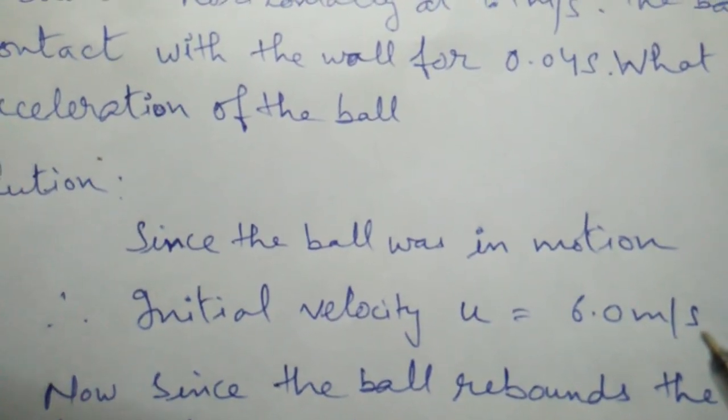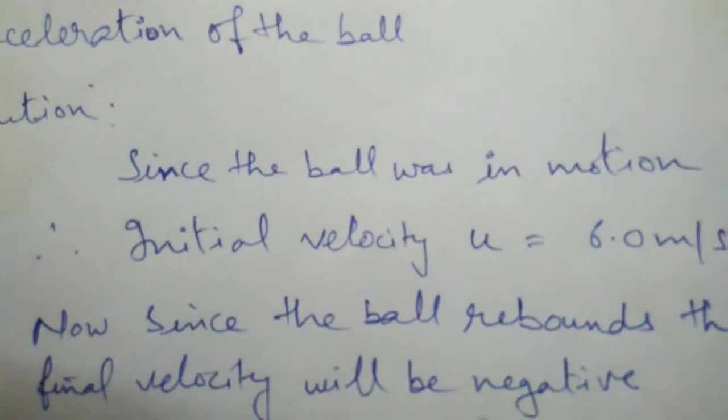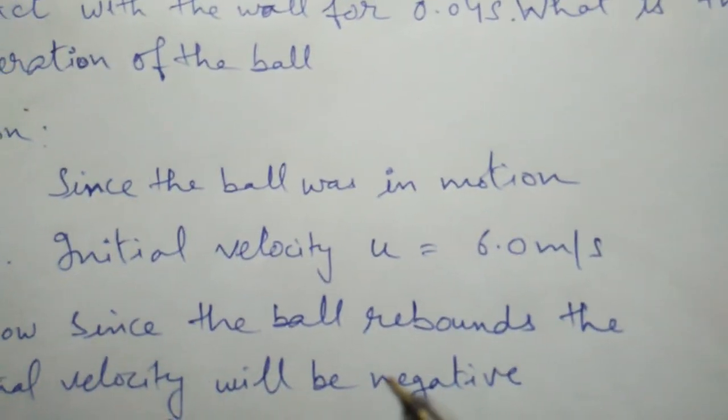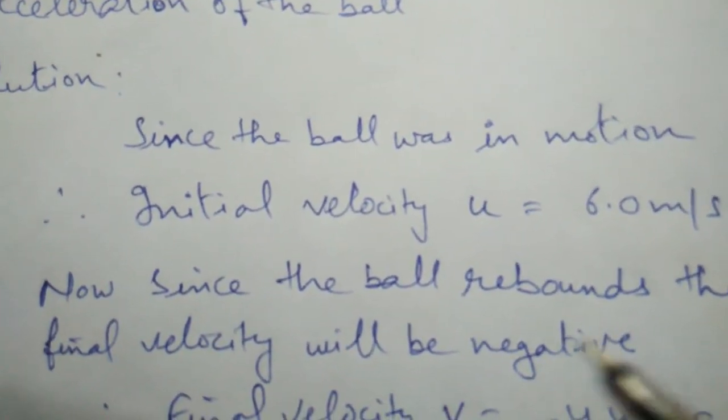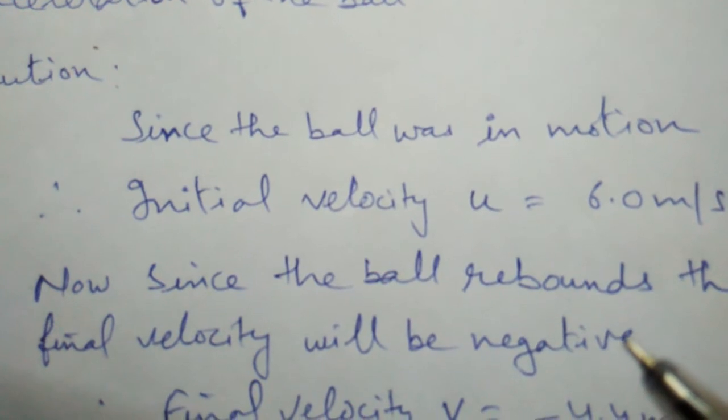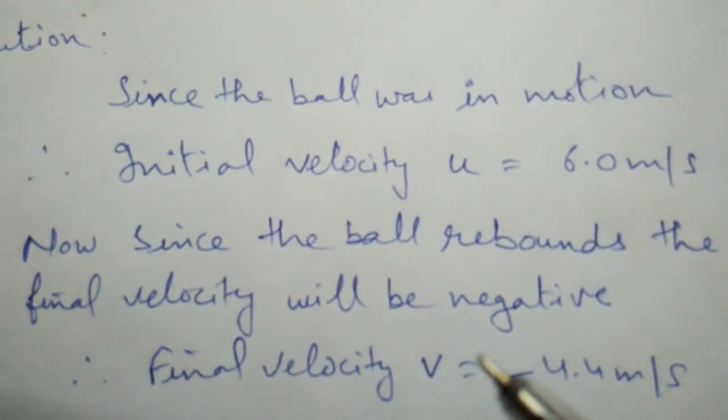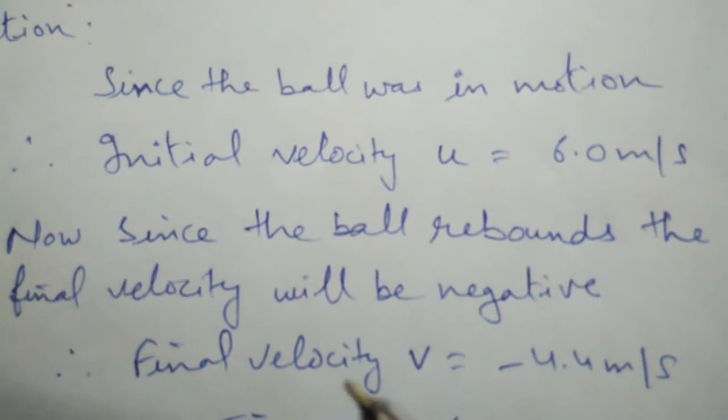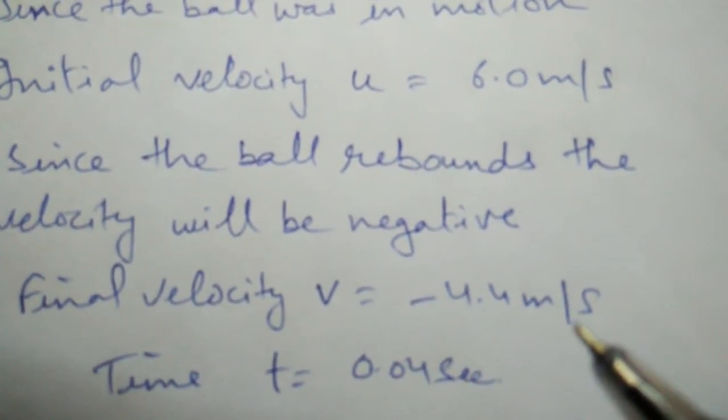Now the same ball after hitting rebounds, then final velocity will be negative because it is coming in the opposite direction. So the final velocity v will be minus 4.4 meters per second.